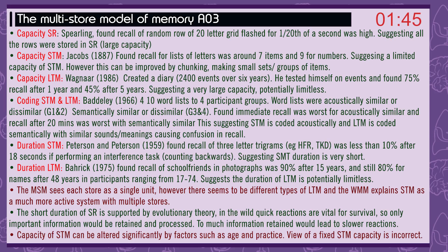Capacity of long-term memory: Wagenaar in 1986 created a diary of 240 events over 6 years. He tested himself and found recall was 75% after 1 year and 45% after 5 years, suggesting a very large, potentially limitless capacity. Coding in short-term and long-term memory: Baddeley in 1966 gave four 10-word lists to four participant groups. Word lists were acoustically similar or dissimilar, and semantically similar or dissimilar. Found immediate recall was worst for acoustically similar, and recall after 20 minutes was worst for semantically similar. This suggests short-term memory is coded acoustically and long-term memory is coded semantically, with similar sounds or meanings causing confusion in recall.